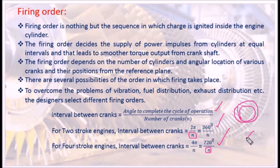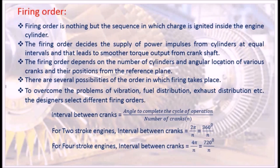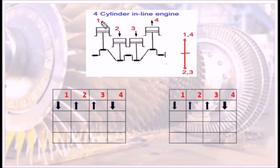For a four-stroke engine, the crank angle per cycle is 720 degrees. Now we have a sample of a four-stroke four-cylinder inline engine. In this configuration, cylinders one and four share one crank position, and cylinders two and three share another, with 180 degrees between them.